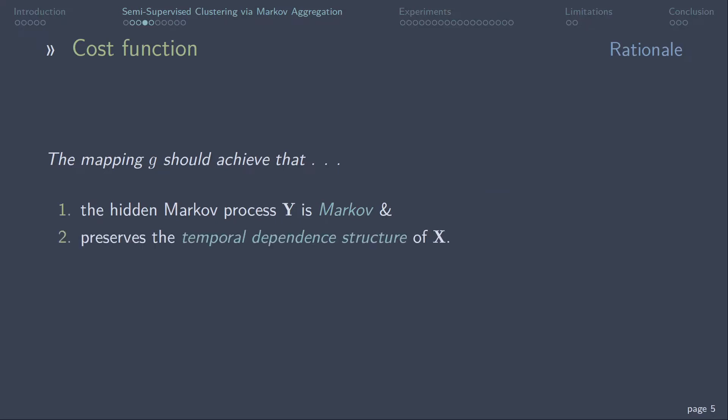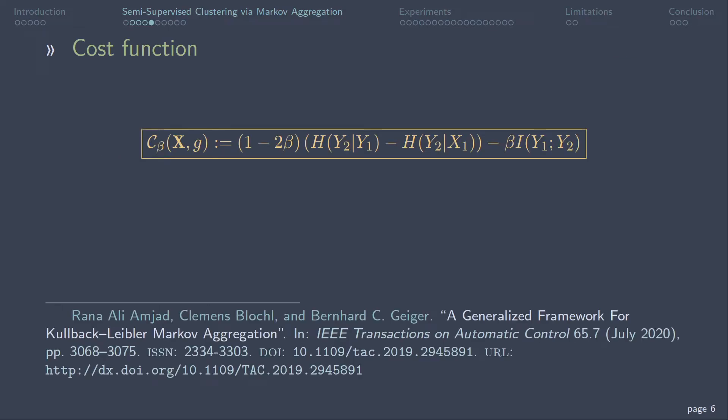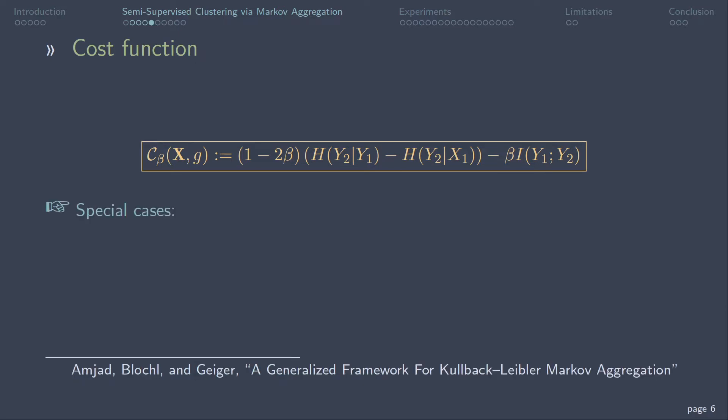This mapping is determined by minimizing the following cost function cited below. The first two terms consisting of conditional entropies are concerned with keeping the Markov property. The third term captures the goal of preserving the temporal dependence structure of X. This framework covers some special cases. For beta equal to 0.5, the information-theoretic powers clustering, and for beta equal to 1, the information-bottleneck problem.